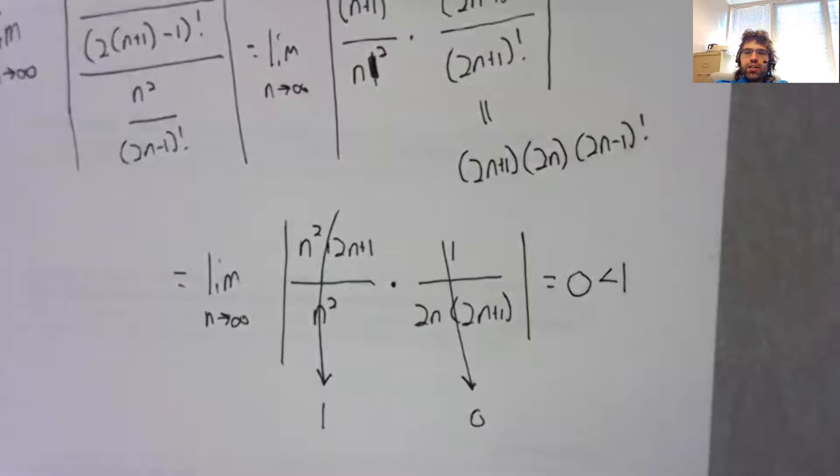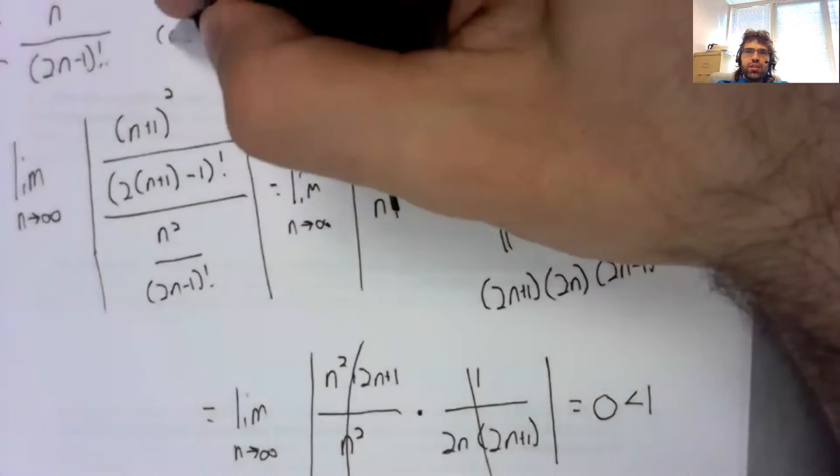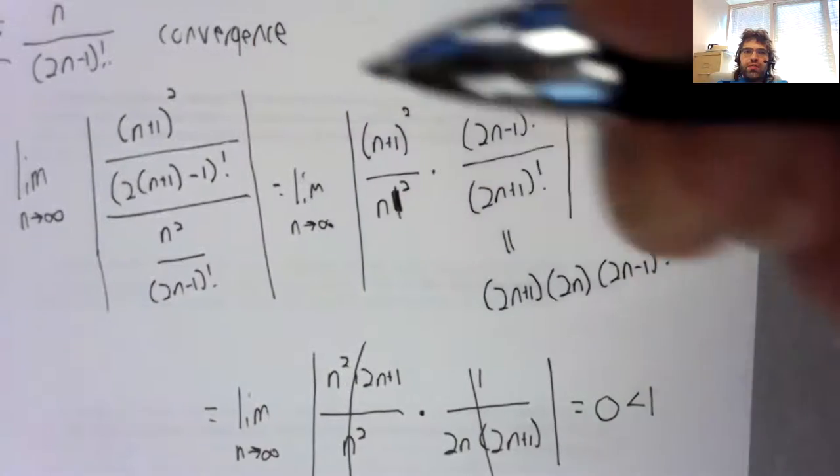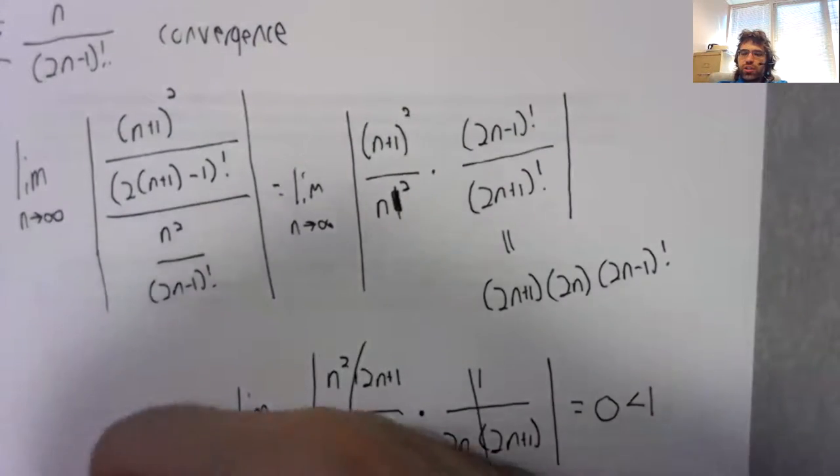And anything less than one. So the limit gives convergence.